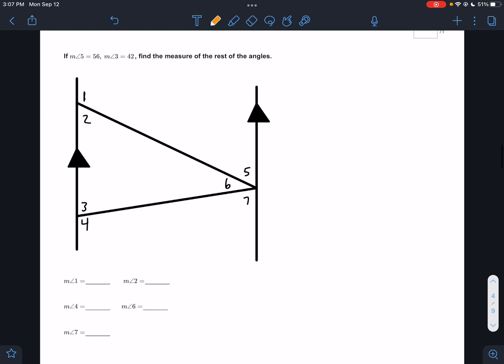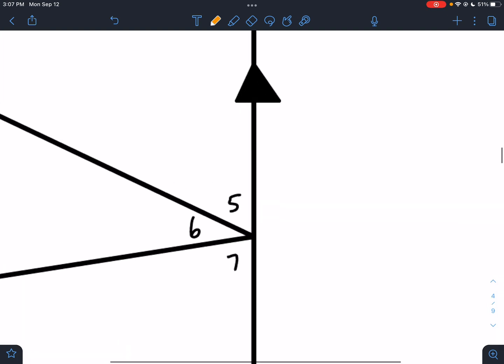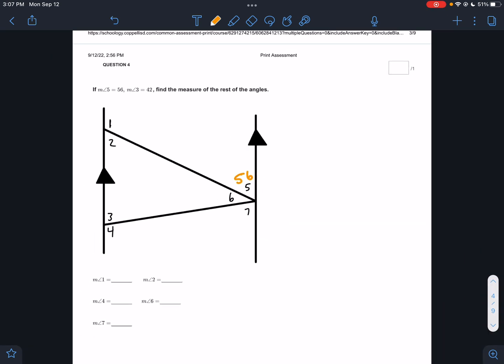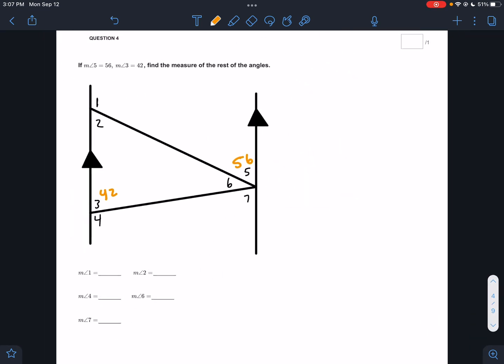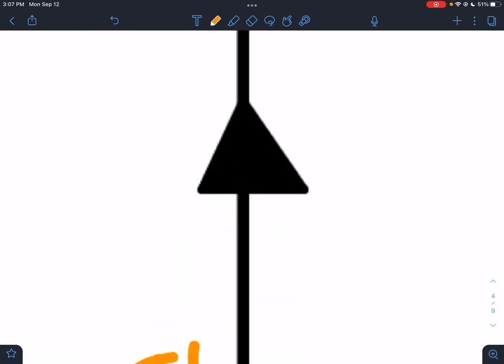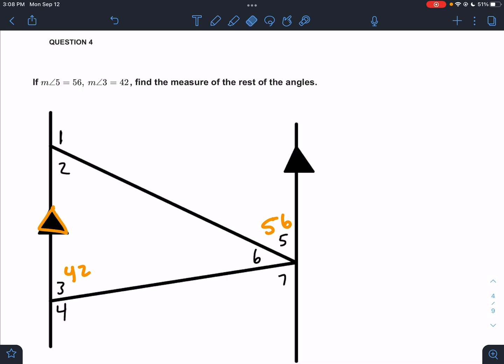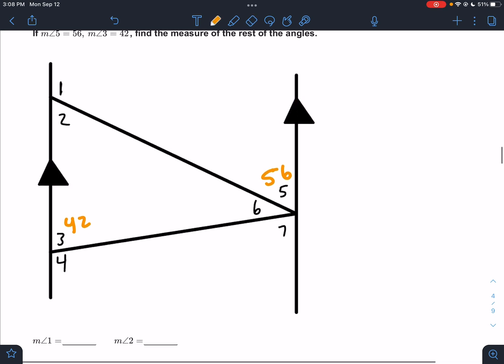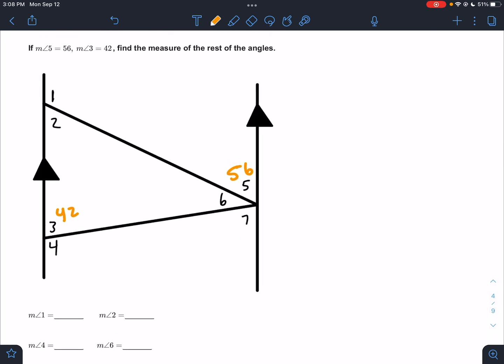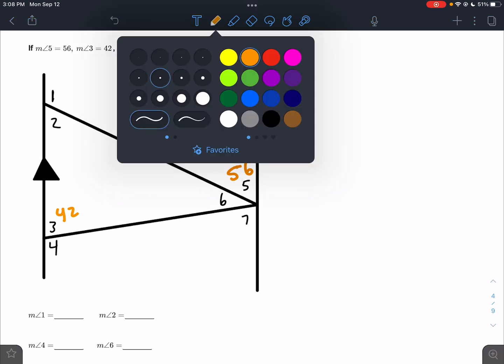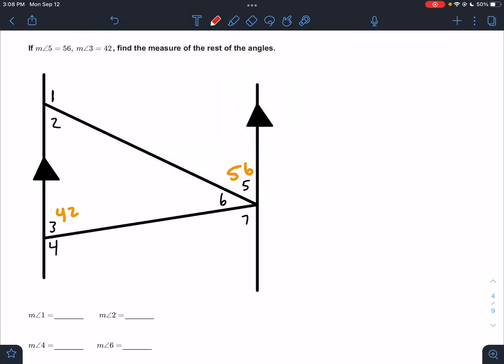Same picture. It says the measure of angle 5 equals 56, the measure of angle 3 equals 42. So 56 and 42. Find the measure of the rest of the angles. These arrows, if you see arrows like this on lines, it indicates that they go the same direction. If they go the same direction, we know that they're parallel. So we do know they're parallel. We're going to have to use parallel properties. We kind of just were kind of looking at this before. Like if I look here, angle 1 and 5, those are same side interior angles.